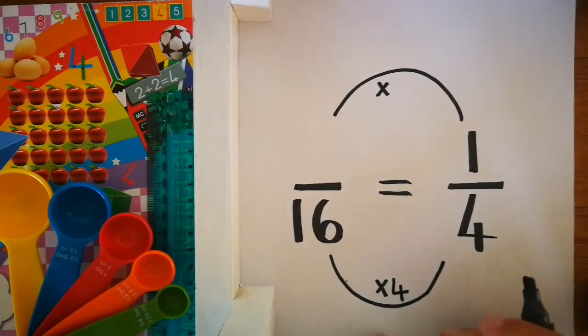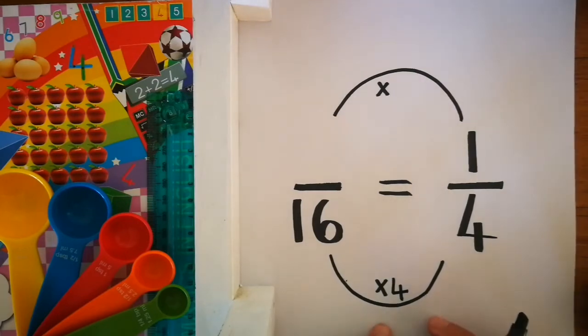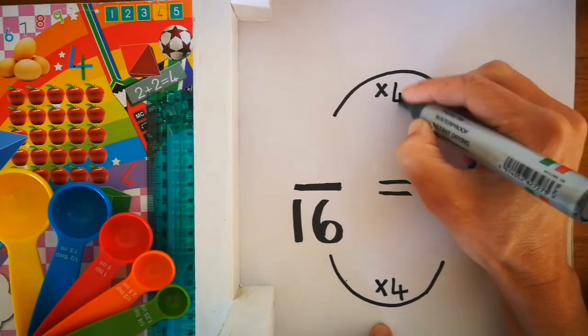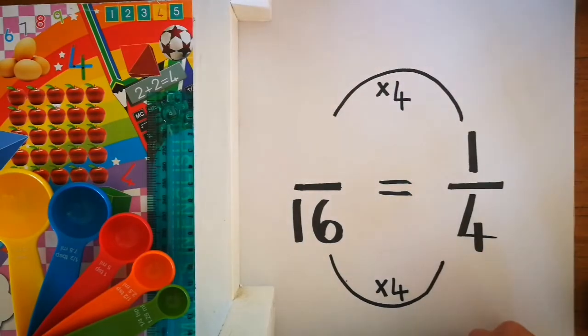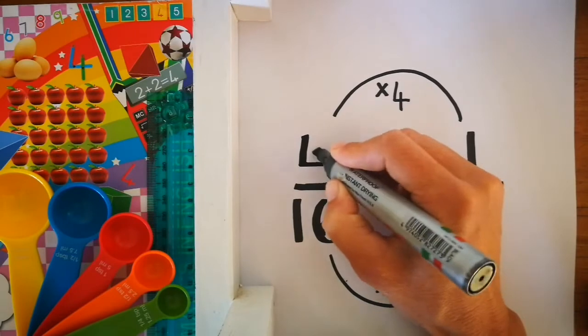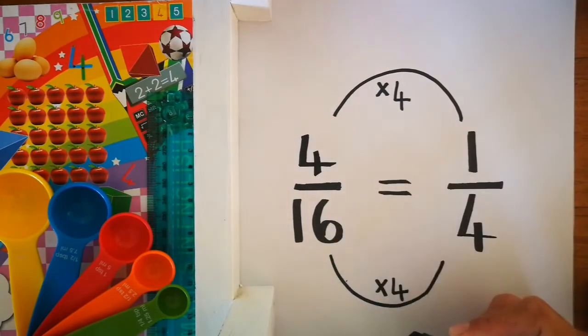And with fractions, what you do to the bottom number, you always do to the top. 1 times 4 is 4.